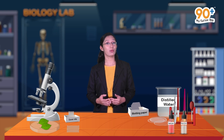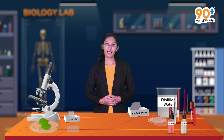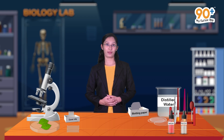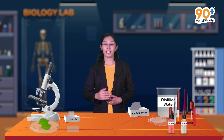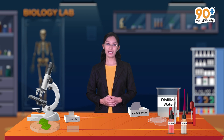Now shall we move on to our experiment. In order to find out the distribution of stomata, we need to take the peels of the upper and lower surfaces of a leaf. For this we have selected a fresh leaf from the petunia plant. Now let us see how to take the peels from the leaf.